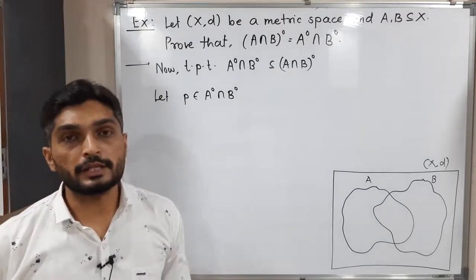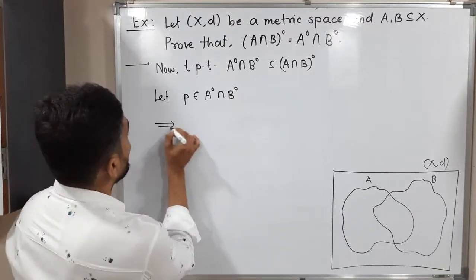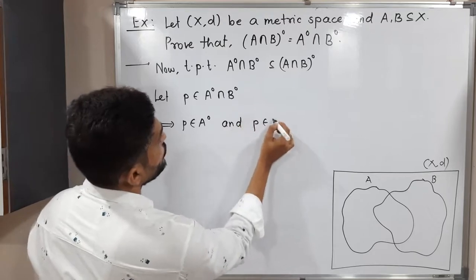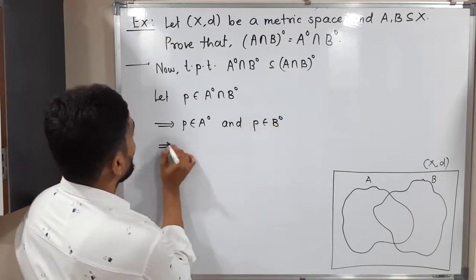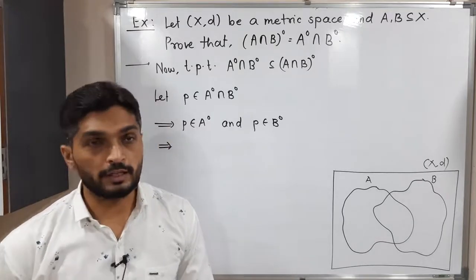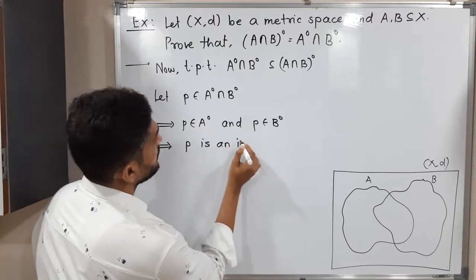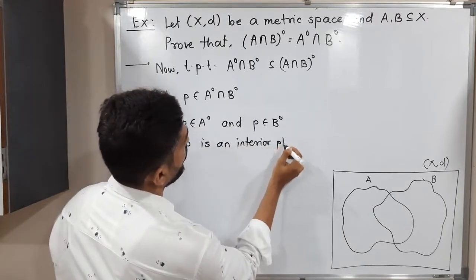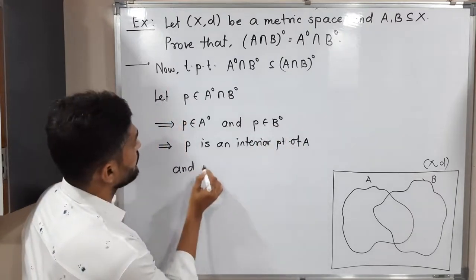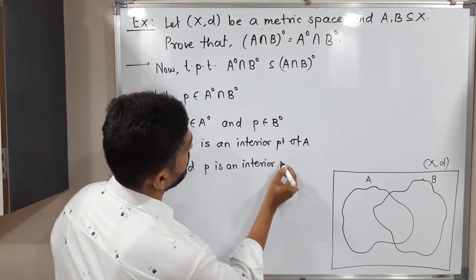Let P belong to the interior of A intersection the interior of B. Since P lies in the intersection, P belongs to both sets — so P belongs to the interior of A and P belongs to the interior of B. P belonging to the interior of A means P is an interior point of A, and similarly P is an interior point of B.